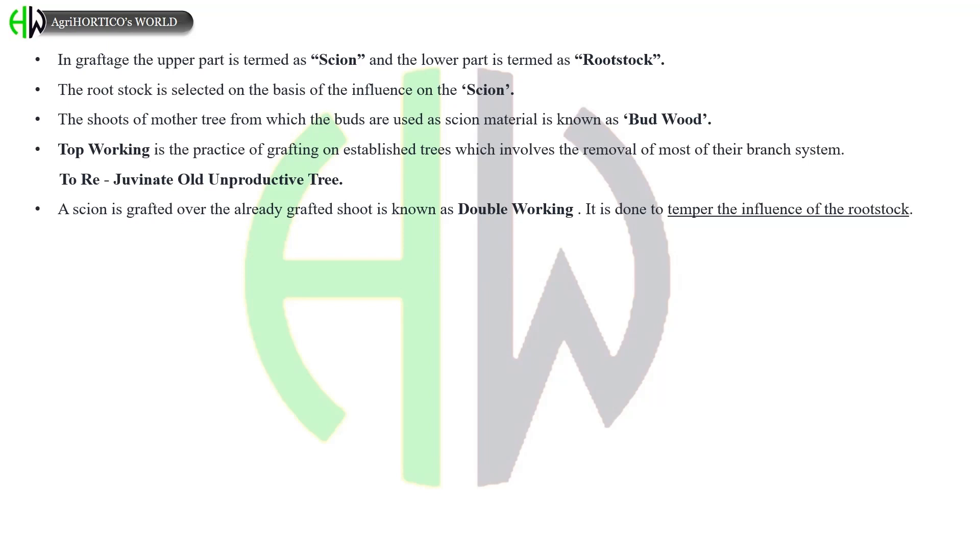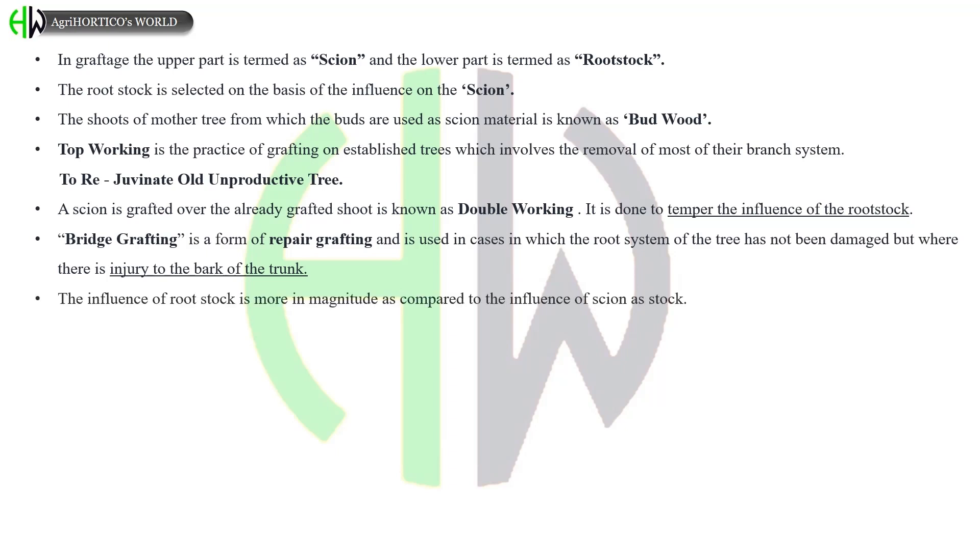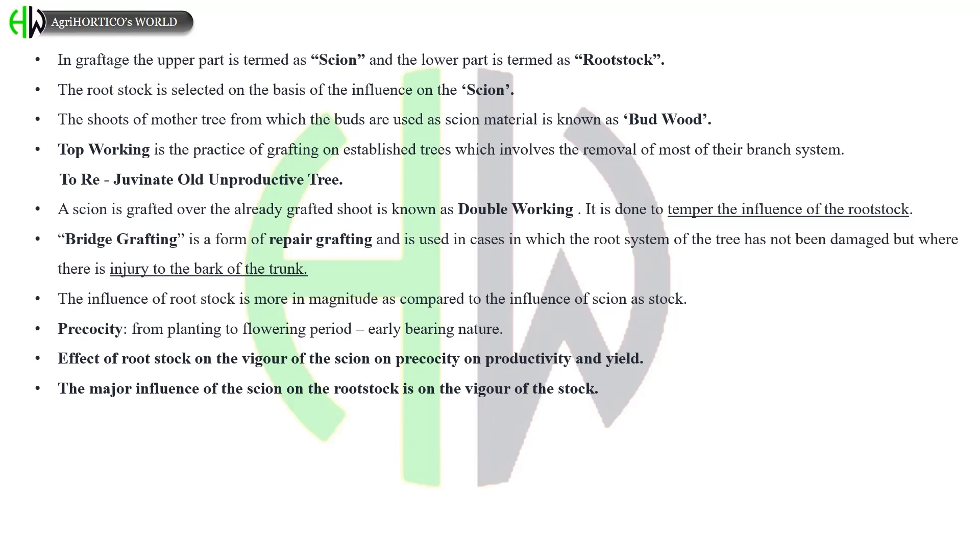Bridge grafting is a form of repair grafting and is used in cases in which the root system of the tree has not been damaged but where there is injury to the bark of the trunk. The influence of root stock is more in magnitude as compared to the influence of scion. Stock affects precocity - from planting to flowering period, early bearing nature. Effect of root stock on the vigor of the scion, on precocity, on productivity and yield. The major influence of the scion on the root stock is on the vigor of the stock.